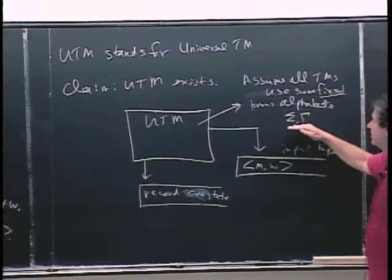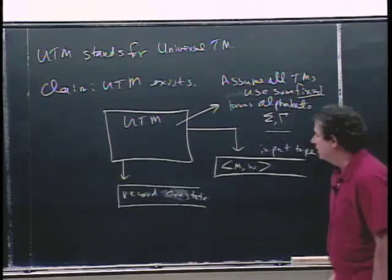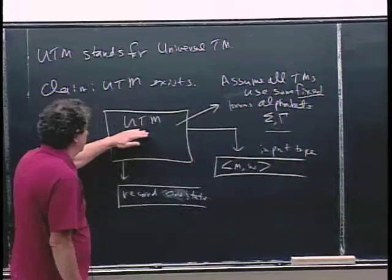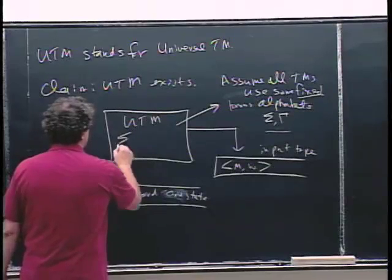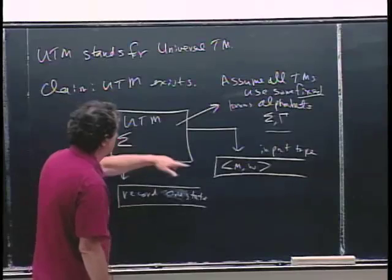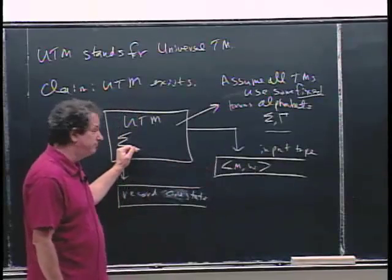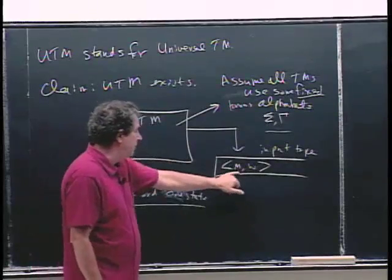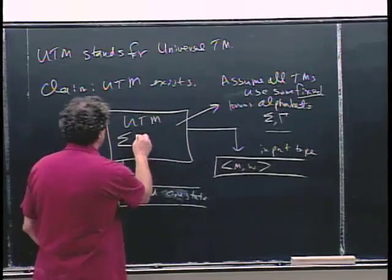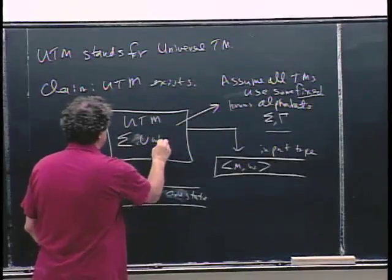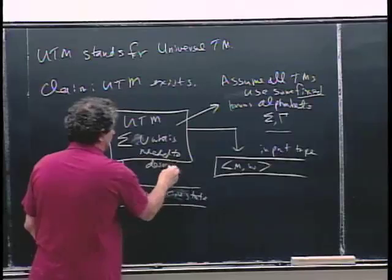We can assume that all the Turing machines actually use some fixed and known alphabet. Gamma is the tape alphabet, and for convenience it was different than sigma, but everything can be done in binary or in ASCII. This is very important in this simulation: we know ahead of time what the alphabet is going to be. The universal Turing machine has to be able to recognize all the characters in W, and the description of M might be a bit richer.